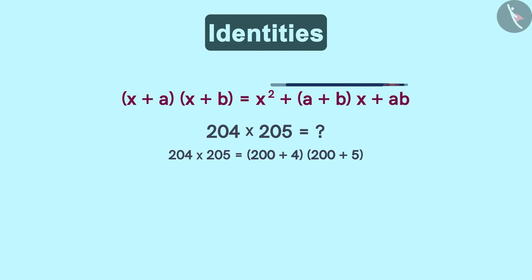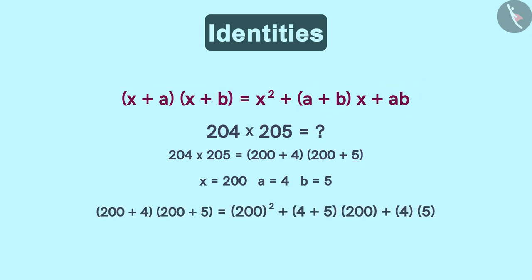Now we can solve the right-hand side using this identity. Here x is 200, a is 4, and b is 5. Substituting these values in the identity we will get this. On further simplification we get this as the final answer.